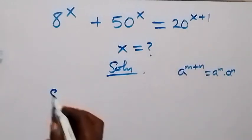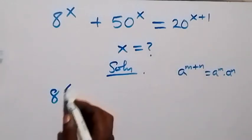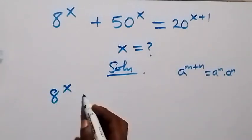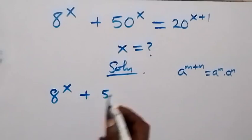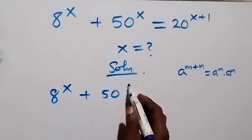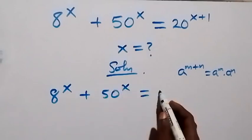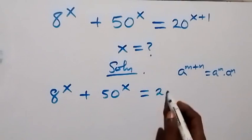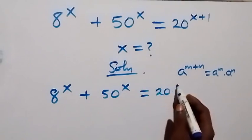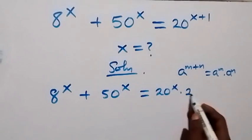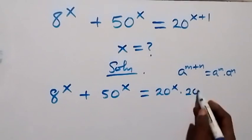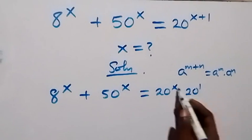this becomes 8 raised to the power x plus 50 raised to the power x, now equals 20 raised to the power x times 20 raised to the power 1.